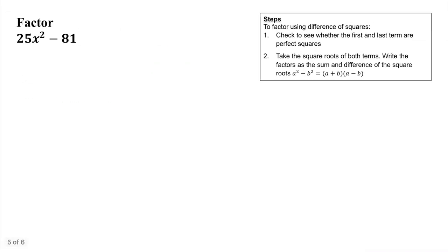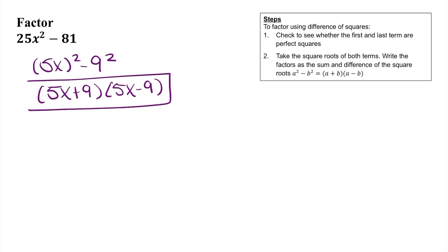If we look at 25x² - 81, notice that once again both of these terms are perfect squares. We can rewrite this as (5x)² - 9². So in factored form, this is going to become (5x + 9)(5x - 9).